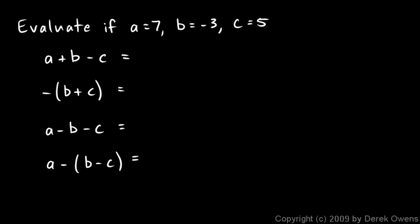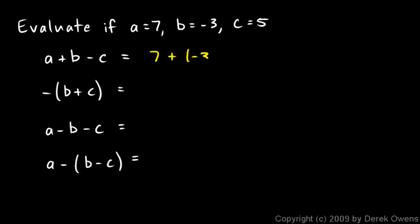Here are a few more examples. We're told to evaluate each of these if a is 7, b is negative 3, and c is 5. So we're going to plug these values in. a plus b minus c — I'm going to rewrite it, putting in 7 for a, negative 3 for b, and 5 for c. So this will be 7 plus negative 3 minus 5. 7 plus negative 3 is the same as 7 minus 3, which is 4, and then minus 5 gives us negative 1. So negative 1 is the answer.